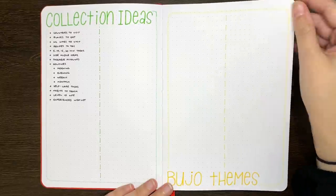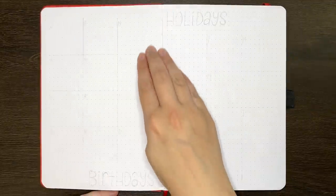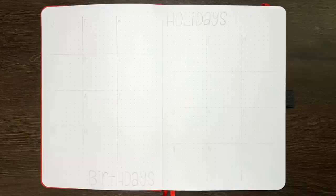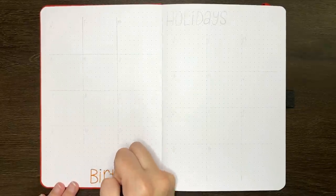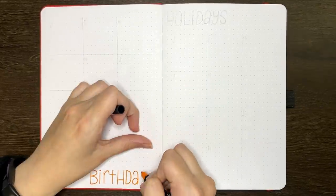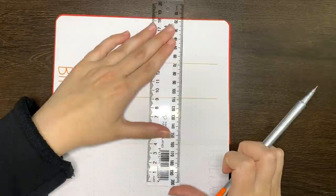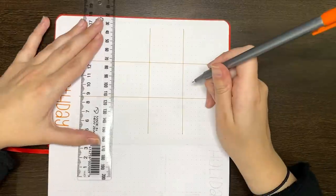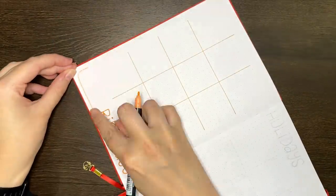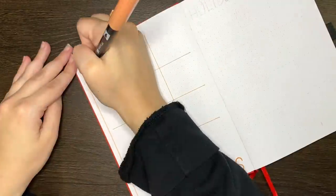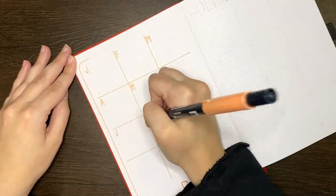Flipping over though, we have two collections that I actually haven't set up previously, and that's a space to record birthdays, and a space to record annual holidays. Each of these I'm splitting up so there's a box for each month of the year that I can then denote with the month's initial. When I come to record the birthdays and holidays though, I'll just put them into the relevant box, making sure to note which day of the month it occurs on.